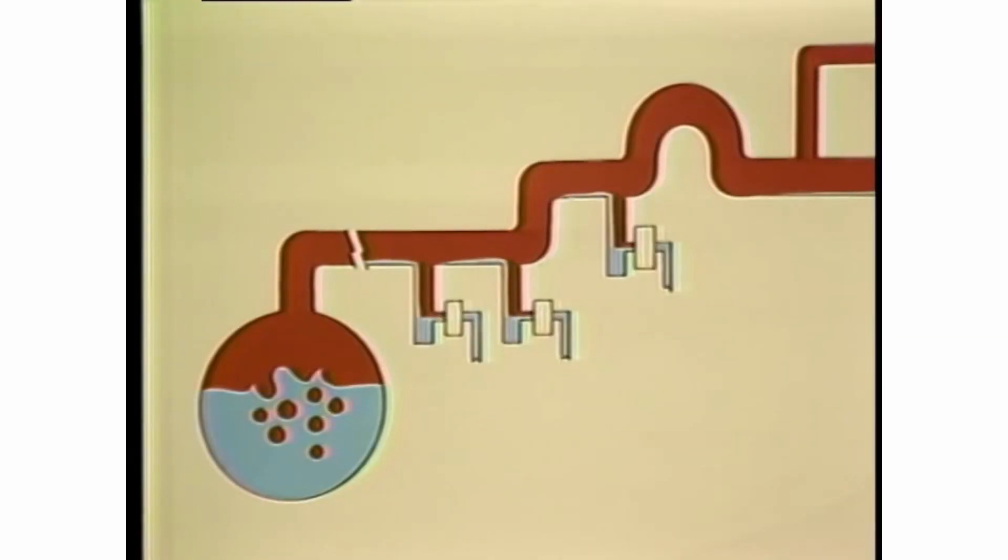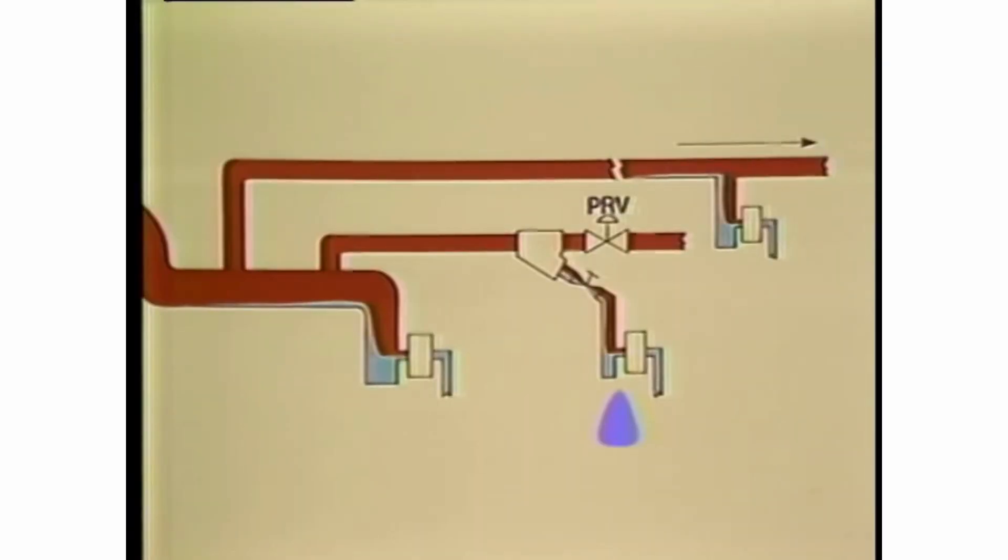Steam mains should be dripped every 300 to 500 feet. Also, install drip traps immediately ahead of risers, expansion loops, pressure reducing valves and temperature regulators, at the end of steam mains, and on long runs of branch lines.